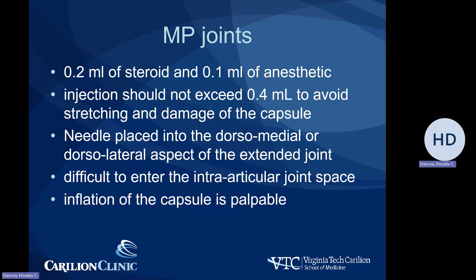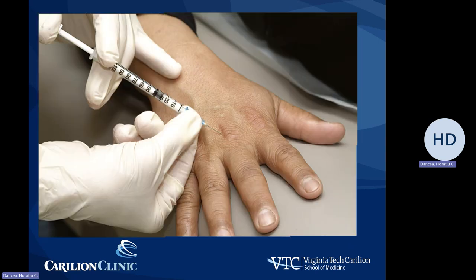For MP joints, we can increase the amount of fluid injected up to probably half a cc or slightly more. The technique is similar to the PIP joint, through the dorsal aspect of the joint kept in extension. Inflation of the capsule is usually palpable or even visible depending on the amount injected.